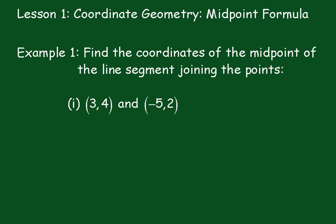OK, example 1: find the coordinates of the midpoint of the line segment joining the points (3, 4) and (-5, 2). We'll call this midpoint M, so write it as M equals (3 + (-5))/2 and (4 + 2)/2.